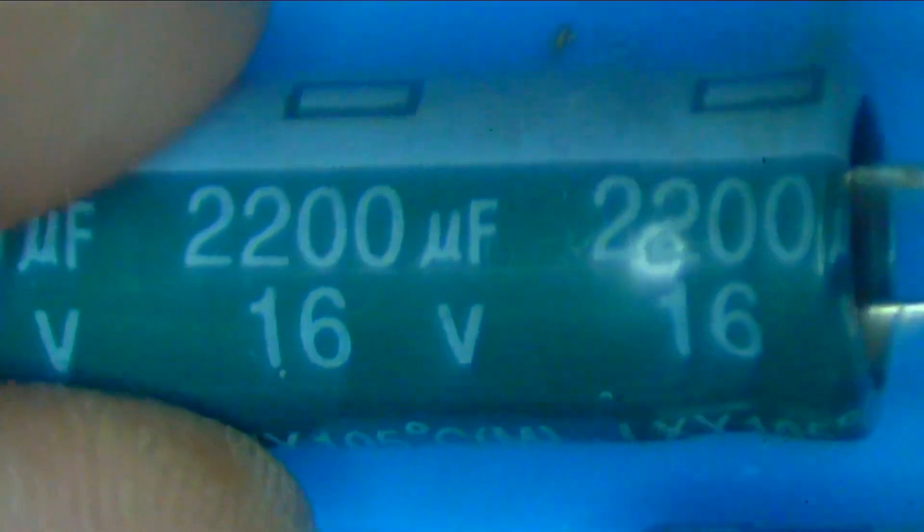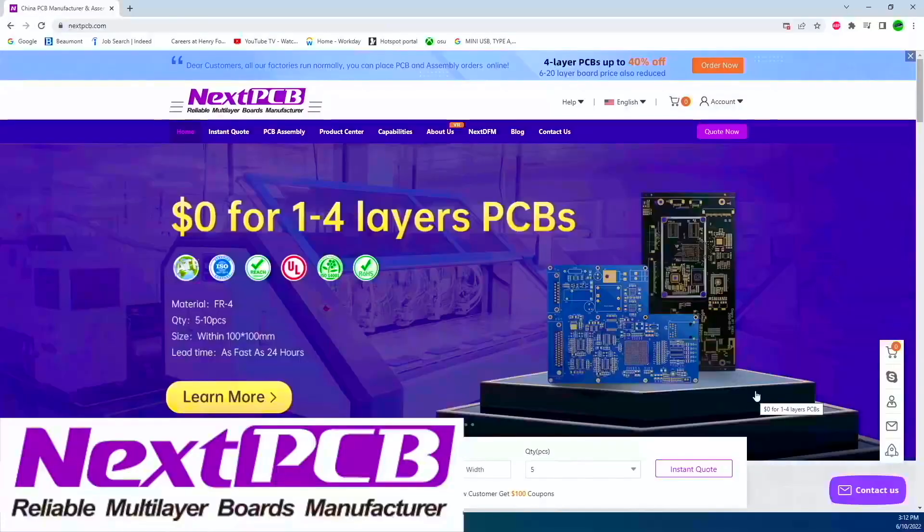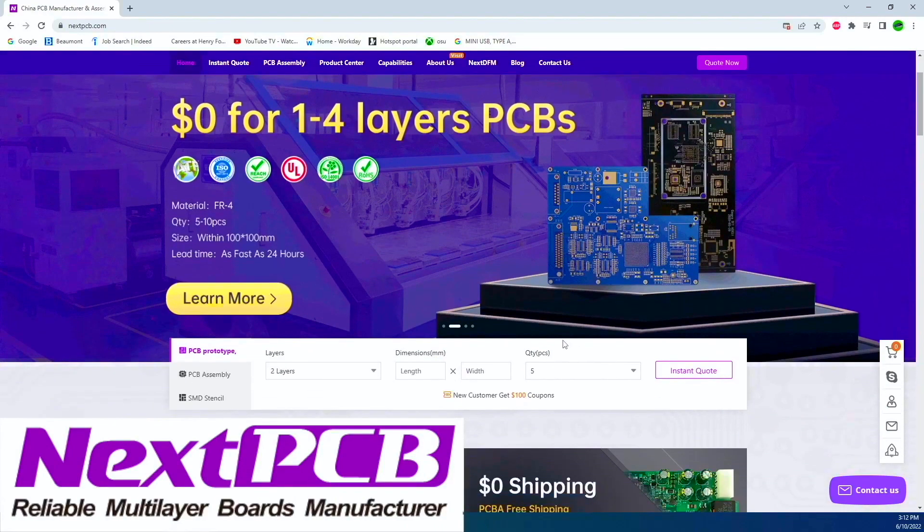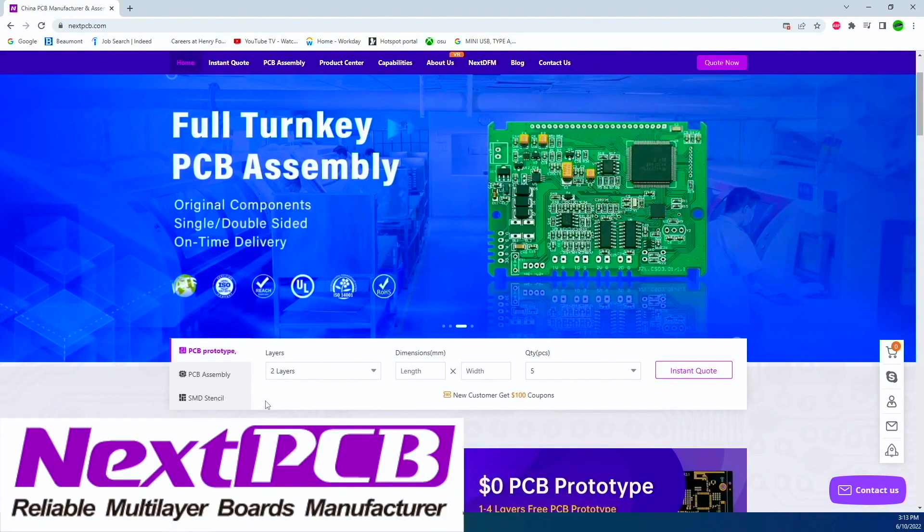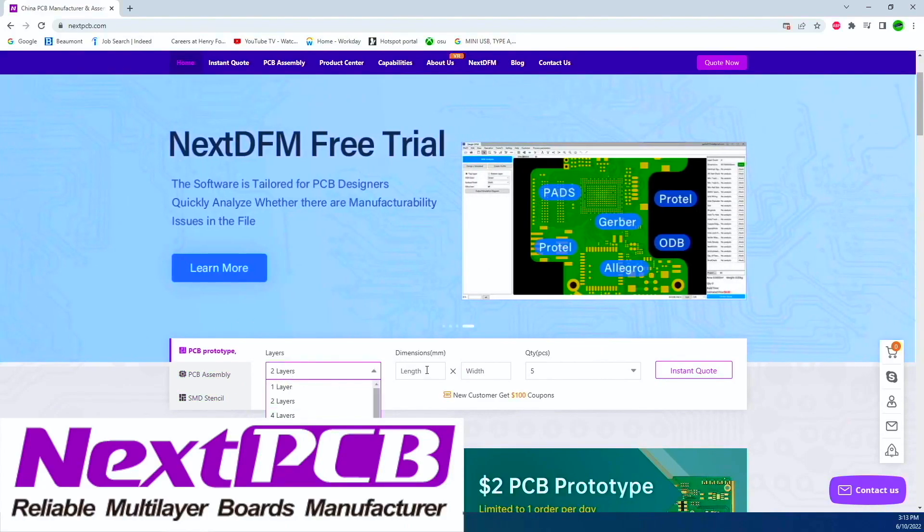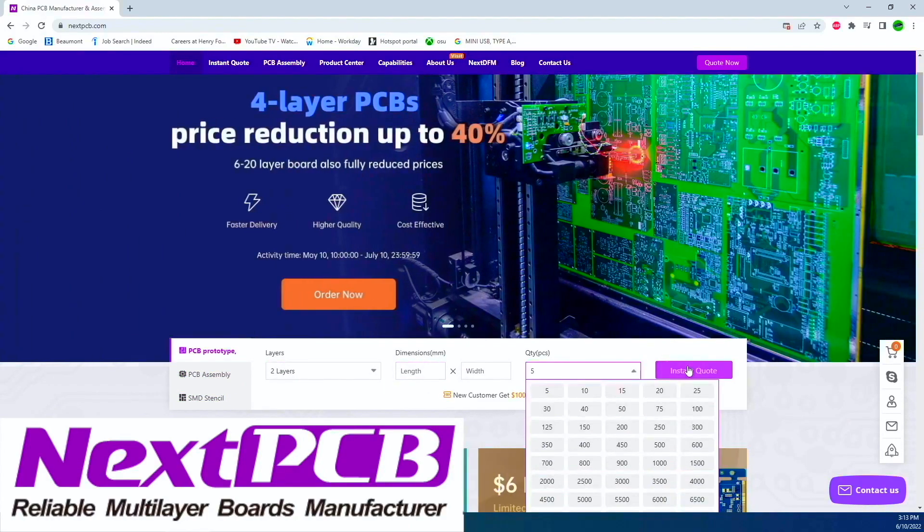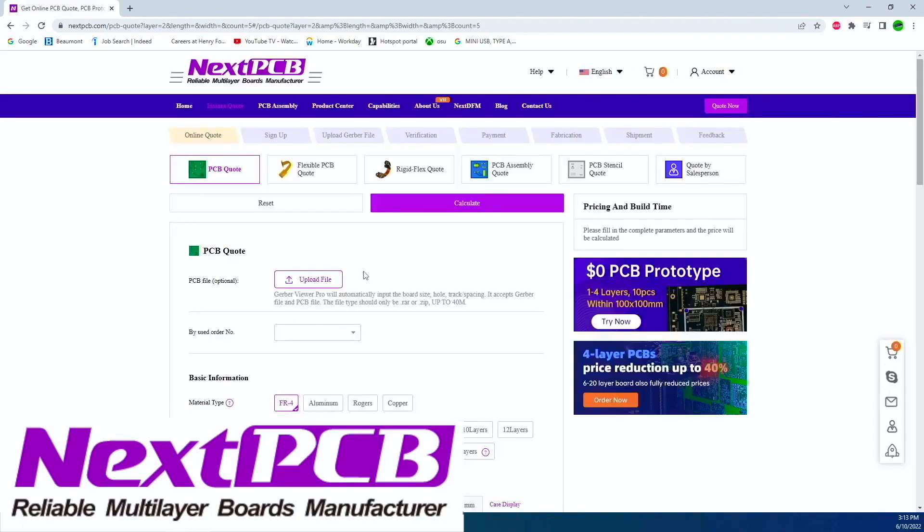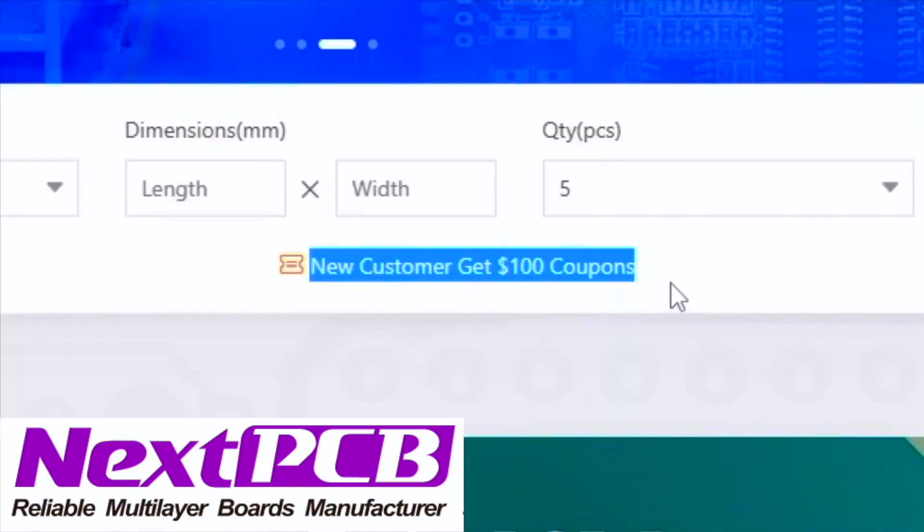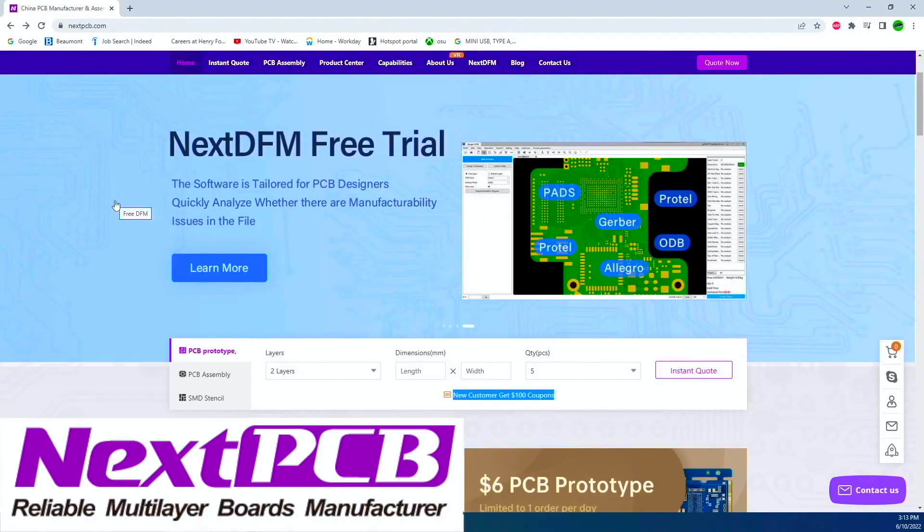This video is sponsored by NexPCB. Whether you want to build a TSOP NAND reader for your PS3 or you want to build a flight controller for your drone, it's as simple as selecting your layers, your dimensions and your quantity and getting an instant quote right away. Or you have the option to upload a Gerber file. New customers get $100 off coupons. Try out NexPCB. Link will be down in the description.